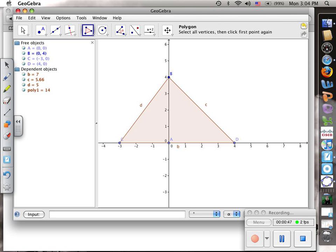If we look over here on the left, it lists the free objects, which are the ones we can move, and then the dependent objects, which are the lengths of the sides and the area of our triangle polygon one.